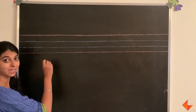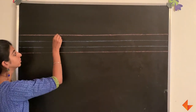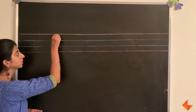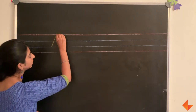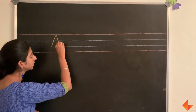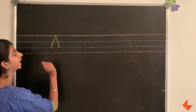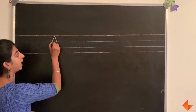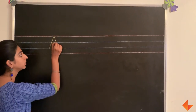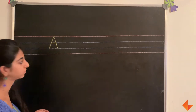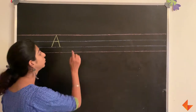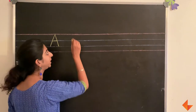To write the letter A, draw a slanting line, another slanting line, and draw a sleeping line.